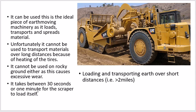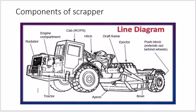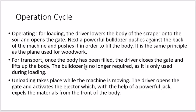Loading and transporting earth over short distances means less than two miles. The components of a scraper include: the radiator, engine compartment, ROPS, hitch (the joining point), draft frame, ejector, push block extending from behind the wheel, and a tractor at the front.